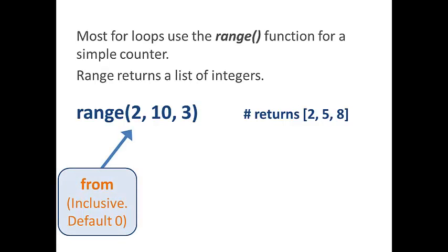So the first value is the from value. This is an optional field. It is inclusive, meaning that it actually starts at two. And it defaults to zero. So if you choose not to put this field, Python will automatically insert a zero for you.